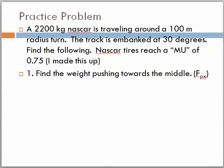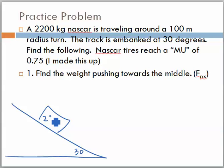Let's use what we have here. A 2200 kilogram NASCAR is traveling around a 100 meter radius turn. The track is embanked at 30 degrees. Find the following. NASCAR tires reach a mu of 0.75. I'm saying I made this up for you. Find the weight pushing toward the middle, which means find Fp of x. So I'm going to real quickly here draw a picture. There's 30 degrees. I've got this mass on here that's 2200 kilograms. And now I'm just going to start filling in my information that I know here.